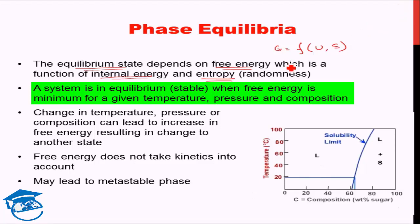A system is in equilibrium when the free energy is minimum for that given temperature, pressure, and composition. So the equilibrium corresponds to the free energy minima for a combination of temperature, pressure, and composition.